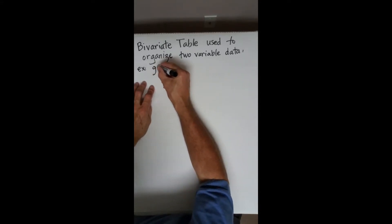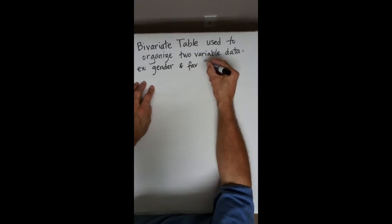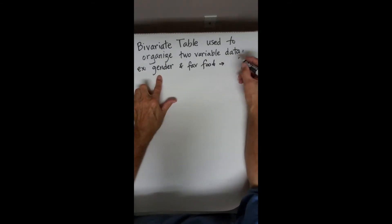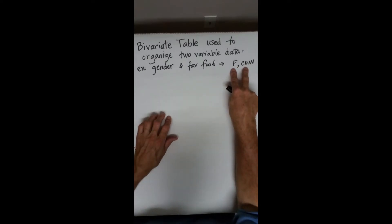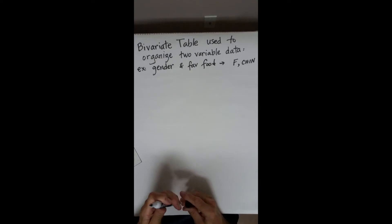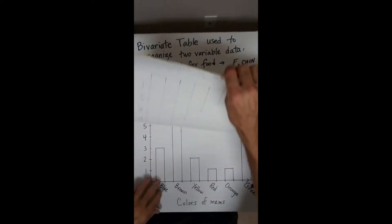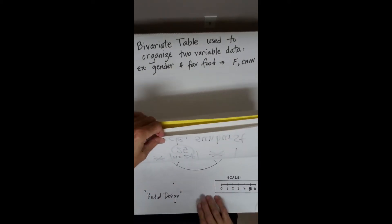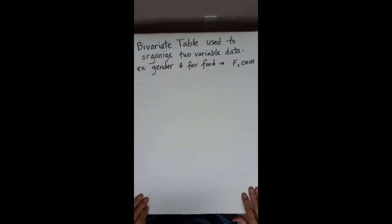For example, rather than just asking what someone's gender is — male or female — you might ask what is your gender and what is your favorite food. In this case you may have a female who likes Chinese food. For each individual in your sample you're getting two responses. This is fundamentally different from what we did in prior examples, where you had a single variable like color of M&Ms or die rolls.